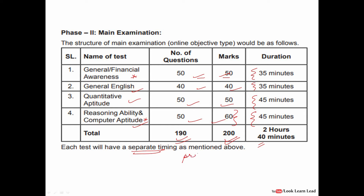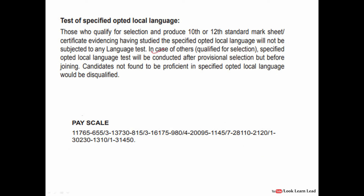Apart from prelims and mains, there is a third test: the local language test. This is the language of the state you applied for — for example, if you applied for Tamil Nadu, you need knowledge of Tamil. If you haven't studied that language in 10th or 12th standard, there will be a test after provisional selection and before joining. If you are not proficient in the opted local language, you will be disqualified even after clearing prelims and mains.